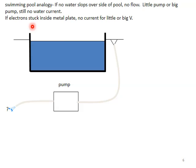If the electrons are stuck inside the metal, you get no current for a little voltage or a big voltage. It doesn't matter. There will be no current if no electrons get out of the metal.